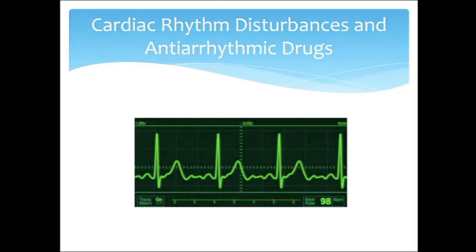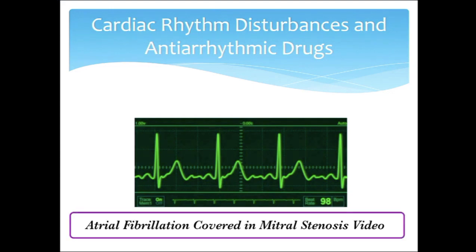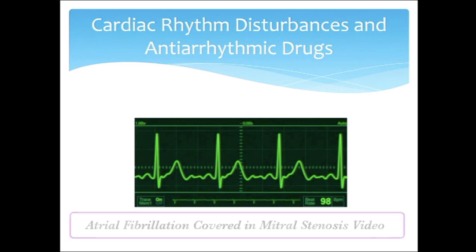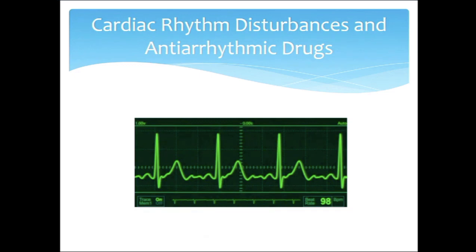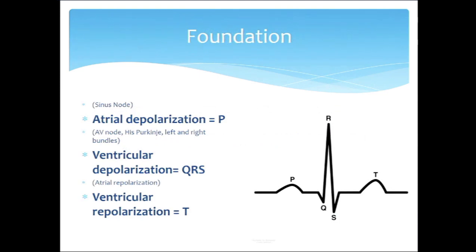We're going to shift gears now a little bit. We're going to focus on heart rhythm disturbances and, in particular, antiarrhythmic drugs and how those two things go together. Basic identification of a limited number of heart rhythm abnormalities from a cardiac rhythm strip is expected on Step 1. You don't need to understand every different heart rhythm, but you do need to understand the pathophysiology and pharmacology related to these different rhythm abnormalities.